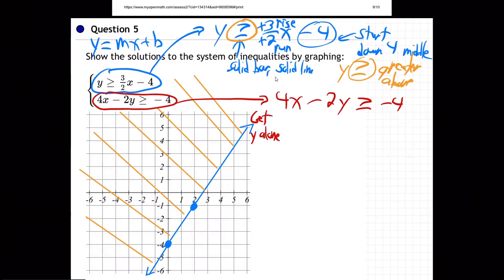Well, right there. Get y alone. So the first step is going to be I'm going to subtract 4x from both sides. So boom. And then we have minus 2y greater than or equal to, and I'm going to put the x in the front. Okay. That's just usually how we see it. You don't have to. All right.